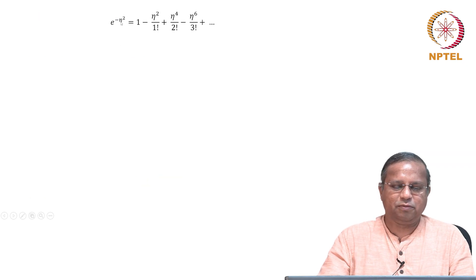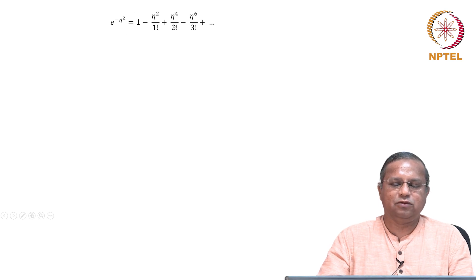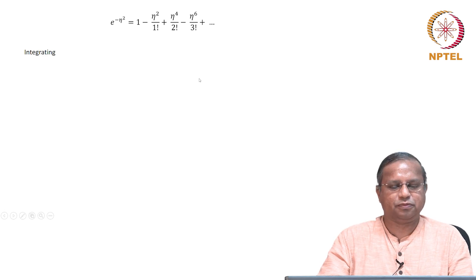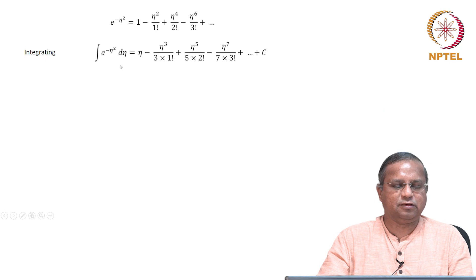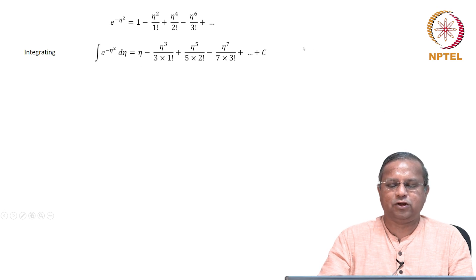The exponential of minus η², if you expand it, is nothing but 1 minus η²/1! plus η⁴/2! and so on. If you integrate this, you get η minus η³/(3·1!) plus η⁵/(5·2!) and so on, plus the constant of integration — this is the series expansion solution.